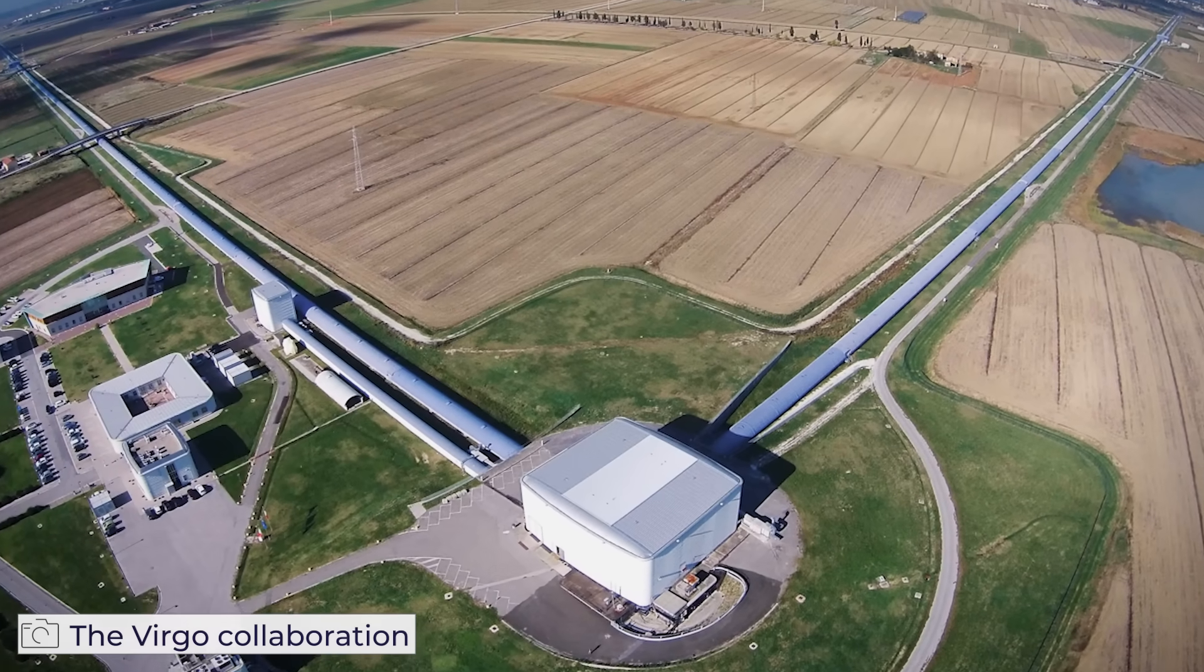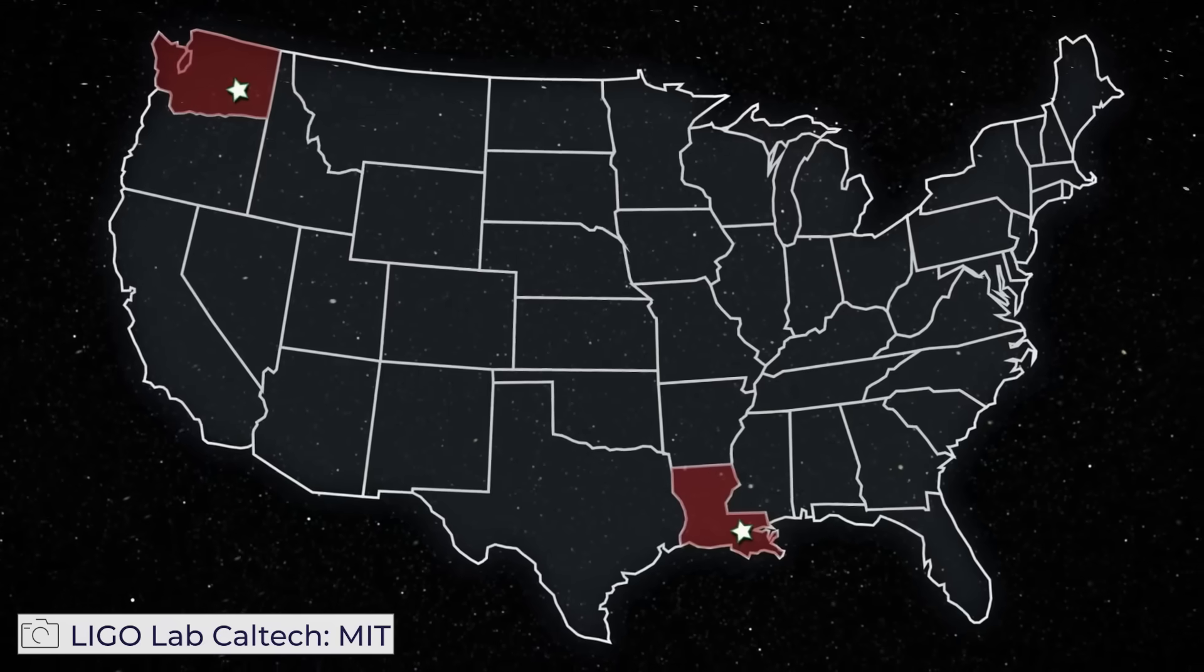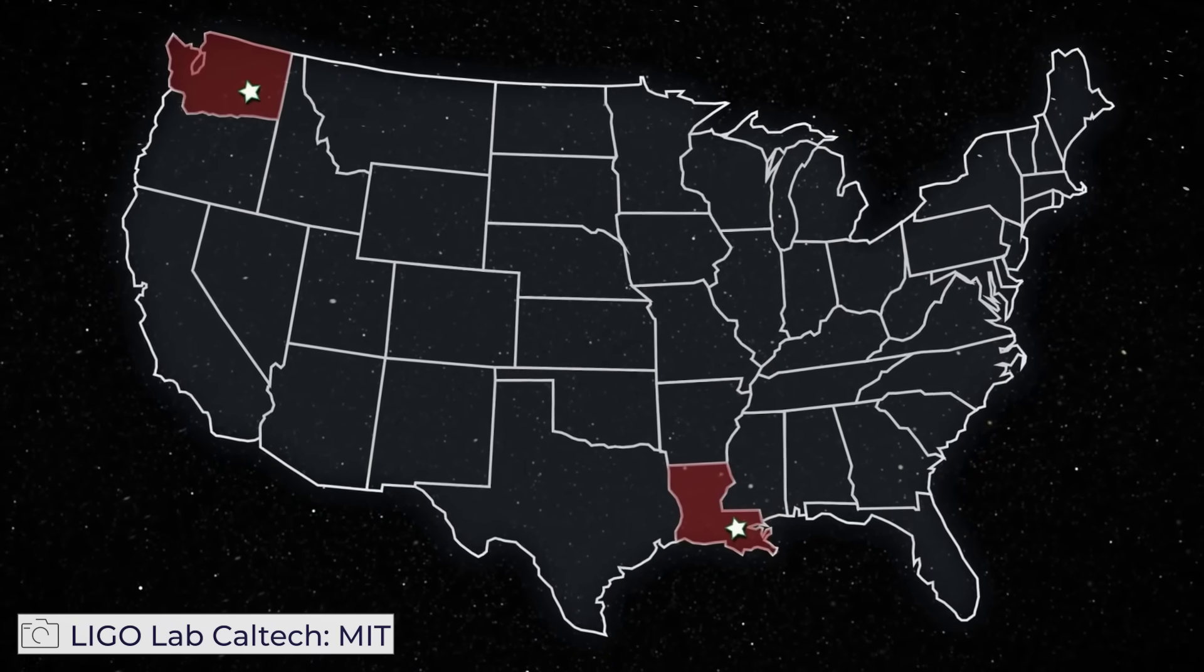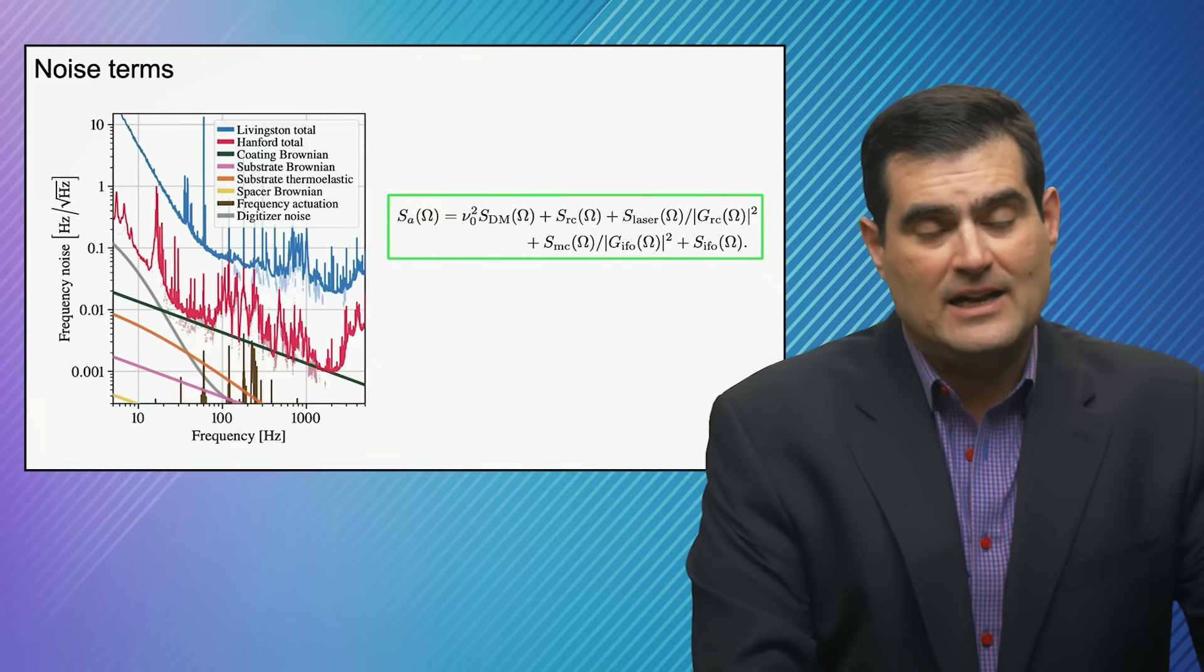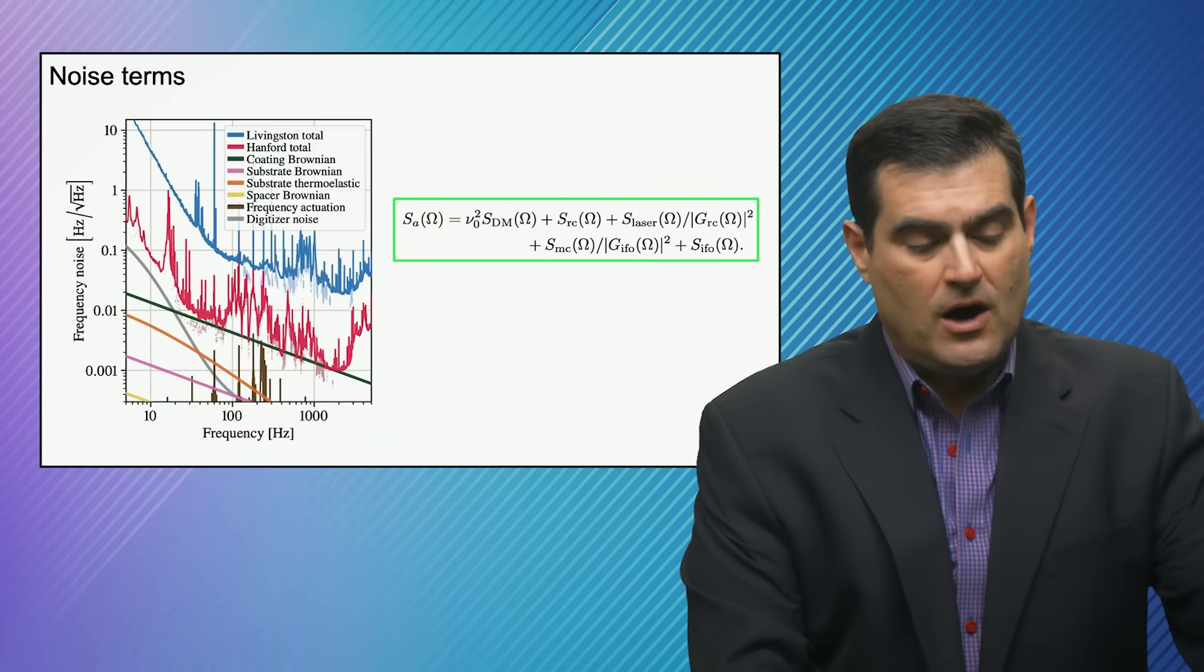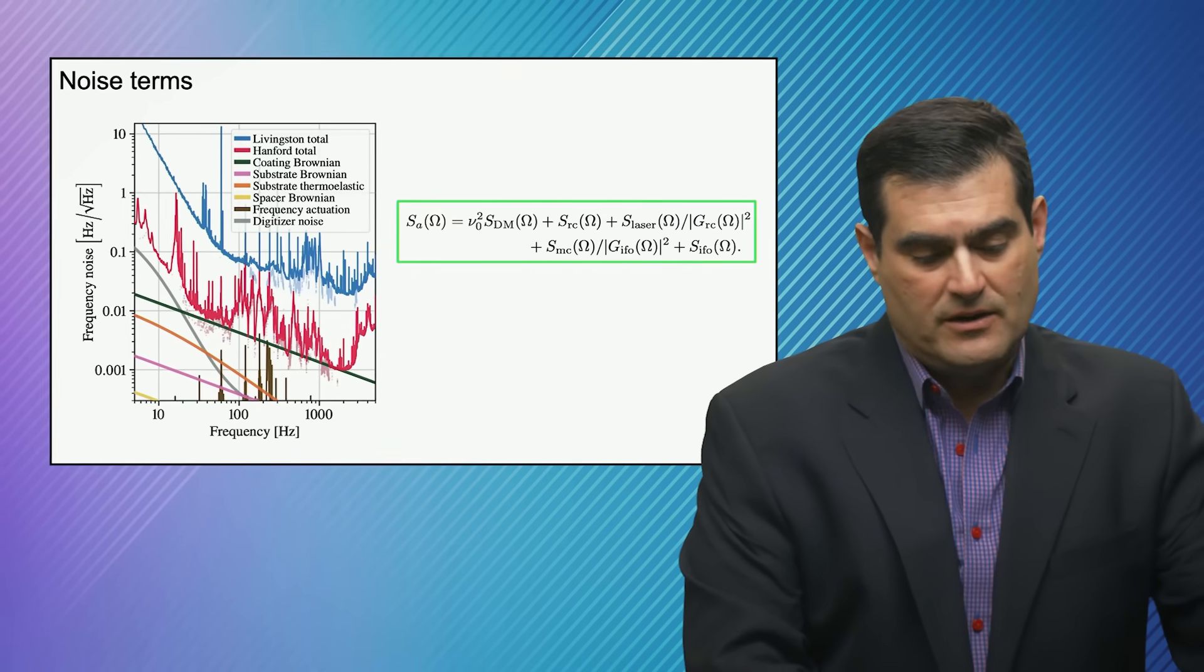So now there's two different LIGO instruments, two different L-shaped interferometers. One is in Livingston, Louisiana, and the other one's in Hanford, Washington. The Hanford one is far better for this particular type of measurement, has 10 times lower noise across the wide spectral band. And these aren't like exotically, extremely high or extremely low frequencies. These are audio frequencies that you could hear with your ears.